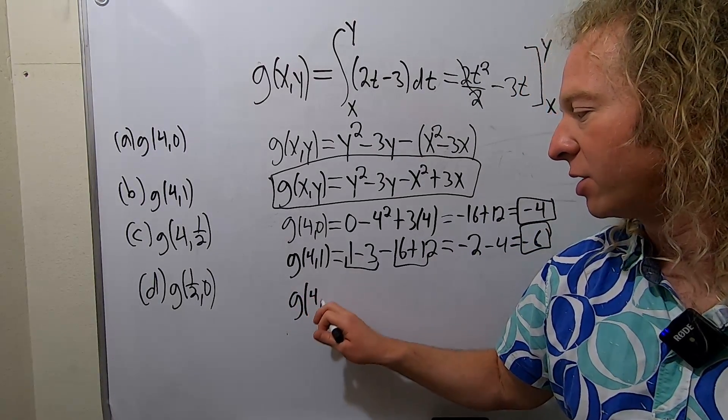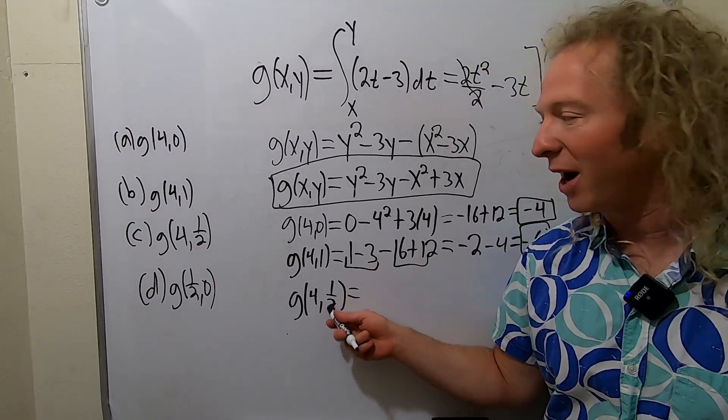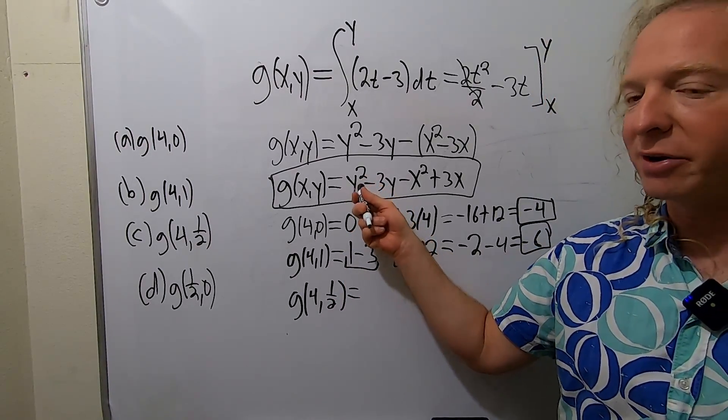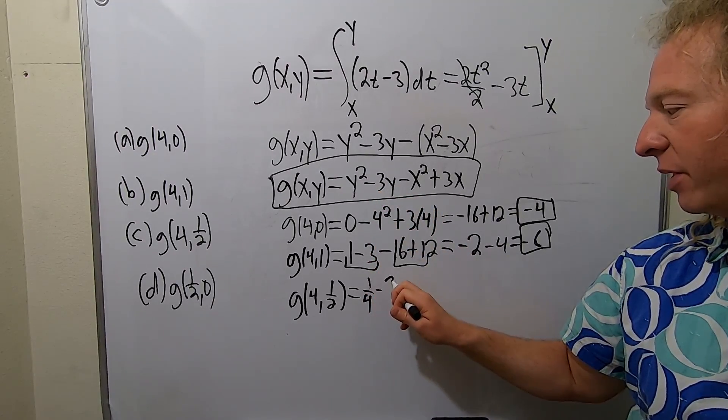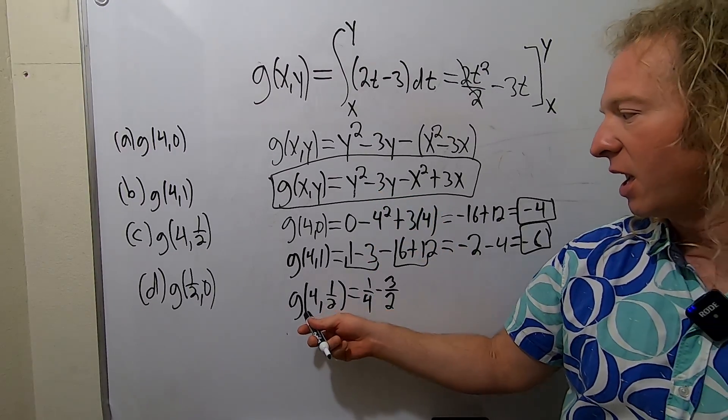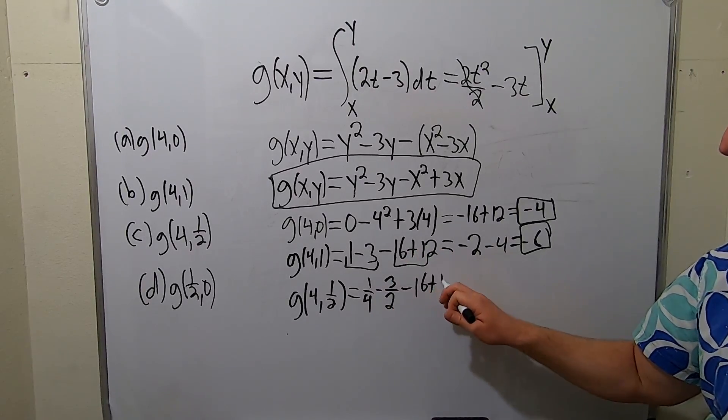g of 4, 1 half. Fractions, game over. So that's our y. 1 half squared is 1 fourth. That's not so bad. Minus 3 times 1 half, so 3 halves. Then again the x is 4. So we know that's negative 16 plus 12, just like before.